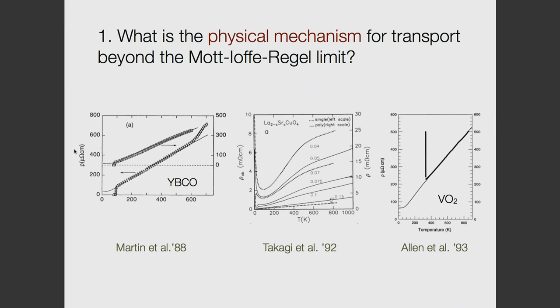First: bad metals are metals that have conductivities well above the Mott-Ioffe-Regel limit, maybe 200 or 300 micron-centimeter. Here are a couple of cuprates, here is VO2. These are going up to very high temperatures and the resistivity just keeps going up. It's been argued often that transport with such a high resistivity is not compatible with a simple quasiparticle picture. One would like to know what is the physical mechanism, what replaces the Drude formula for bad metals.